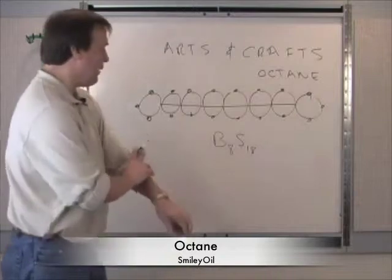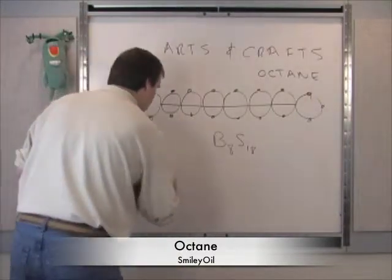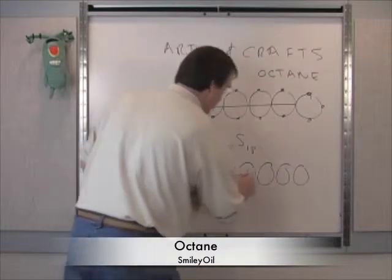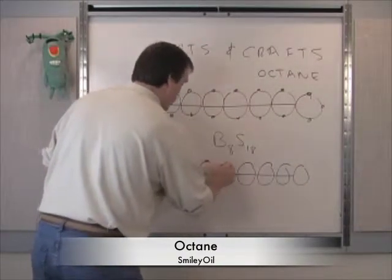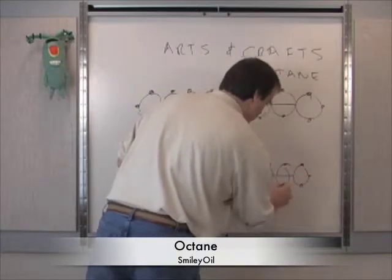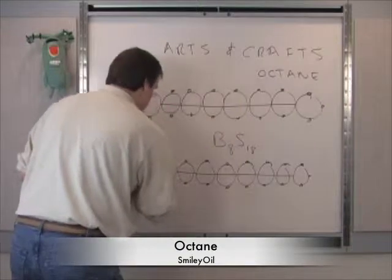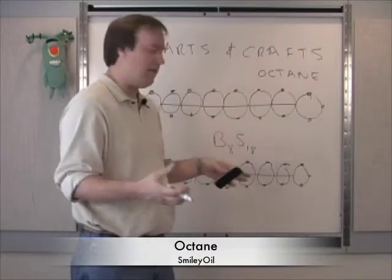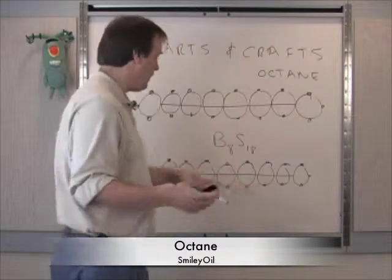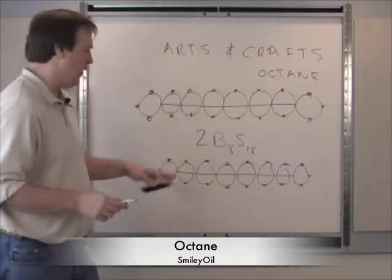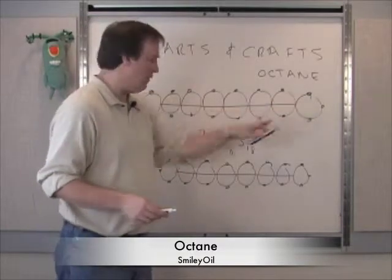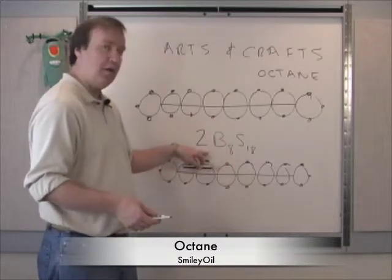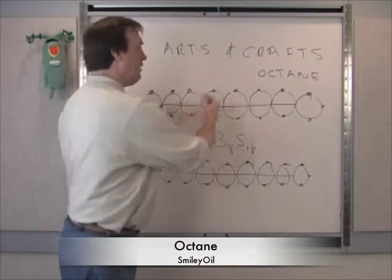Let's go one more step in this naming convention and build an identical molecule to our other octane — absolutely identical, no difference. Do we redraw another B8S18, or what's the method to describe two octanes? The answer is you just put a two in front of your molecular formula. B8S18 is the formula for one string of eight beads, and when you have more than one, you just put a two there. So if we had a hundred strings, we'd just put a hundred.